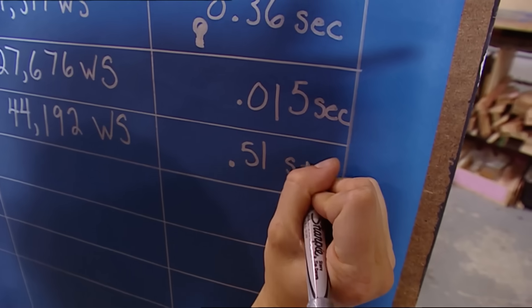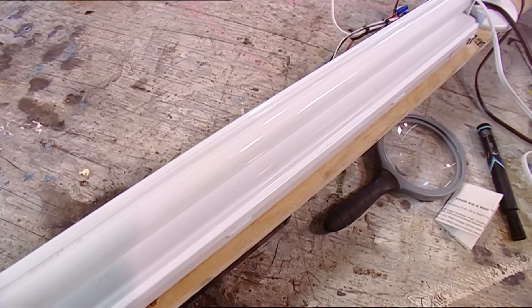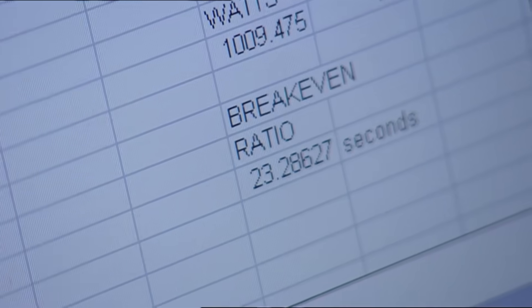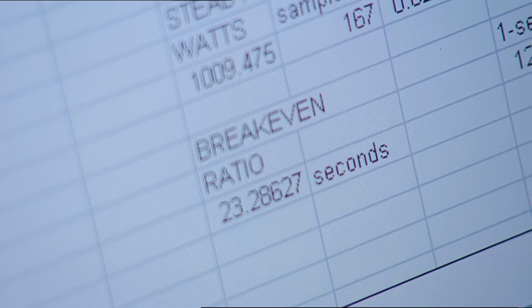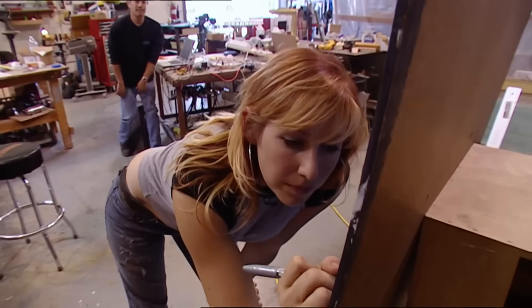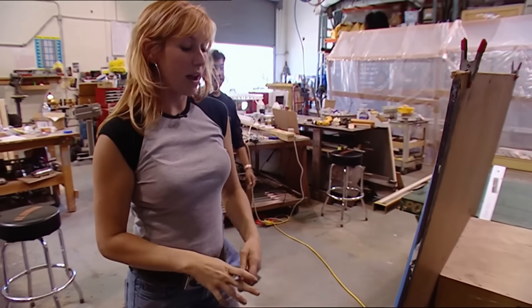Halogen, 0.51 seconds. Okay, fluorescent tube, 23.3 seconds. So the common fluorescent tube draws more energy on startup than any of the other bulbs. But it's still only equivalent to 23 seconds of continuous use.